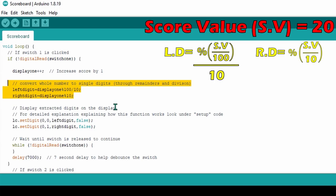Another example, let's say the score is 20. For left digit, 20 divided by 100 has a remainder of 20. Taking that remainder and dividing it by 10, 20 divided by 10 equals 2, so left digit will equal 2. For right digit, 20 divided by 10 has a remainder of 0 and so right digit will equal 0. Therefore, this 7-segment display will show 2,0 which is correct.